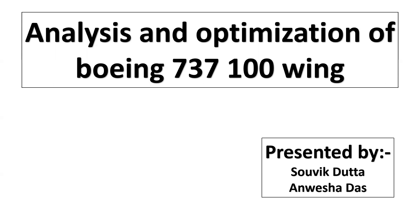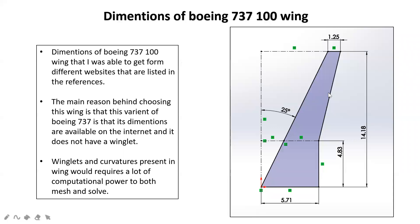What is the Boeing 737-700W? It is the aircraft manufactured by Boeing company. We selected it because its dimensions are available on the internet, and the second reason is that it has no winglet. Having a winglet and curvature on a wing would require a lot of computational power for both meshing and solving.